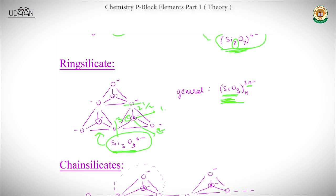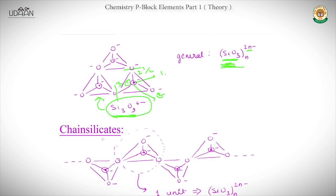Chain silicates form a continuous chain extending in both directions. The repeat unit is SiO₃²⁻. Counting: one silicon, one unshared oxygen, and two bridging oxygens each shared half — giving 1 + 0.5 + 0.5 = 2 + 1 = effective 3 oxygens per silicon — so the general formula is SiO₃²⁻ as well.